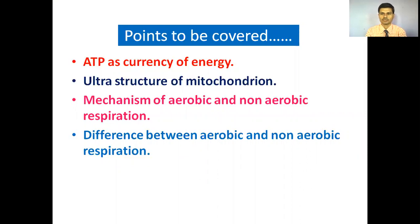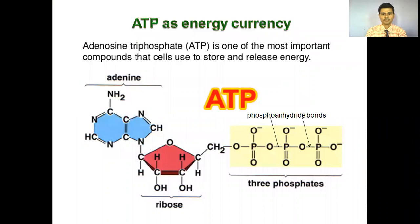The points to be covered during this discussion are: learning about ATP, also called as the currency of energy; we will see the ultrastructure of the mitochondria. ATP long form is adenosine triphosphate. It is one of the most important compounds that cells use to store and release energy. ATP is also called as energy currency, which is stored into the mitochondria. That's why mitochondria are called as the powerhouse of cells.